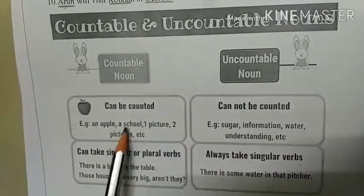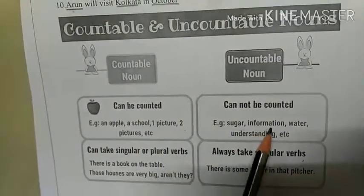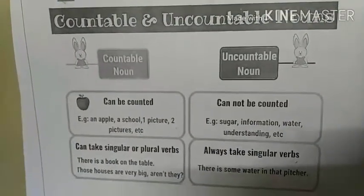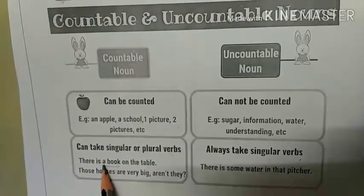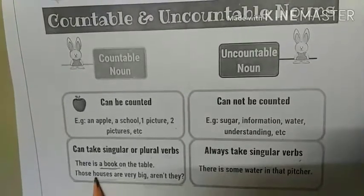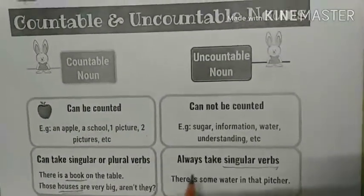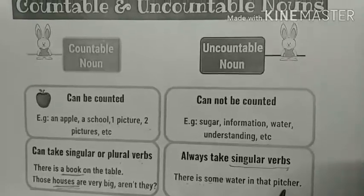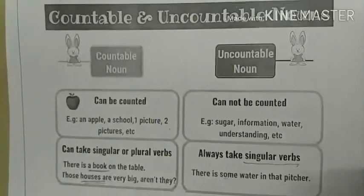Let us see examples. Countable nouns: an apple, a school, one picture, two pictures, etc. Uncountable nouns: sugar, information, water, understanding, etc. We cannot count water or sugar. For example: 'There is a book on the table' — singular. 'Those houses are very big' — plural. Uncountable nouns always take singular verbs, for example: 'There is some water in that picture' — that is a singular verb. It means there is a little water — it is always singular.